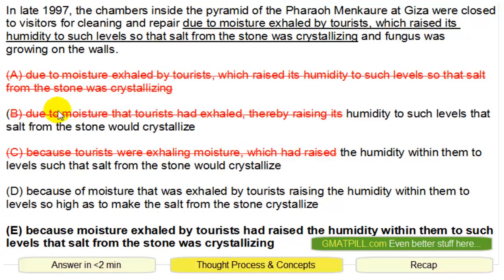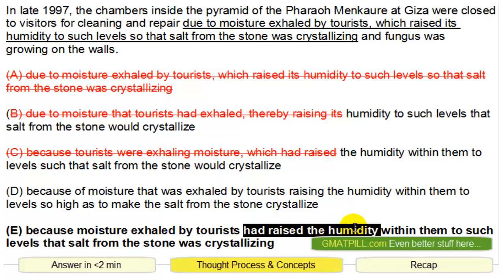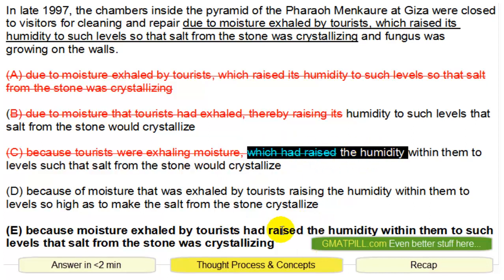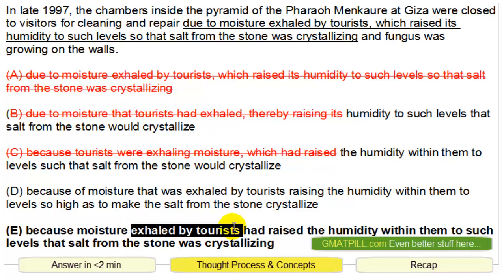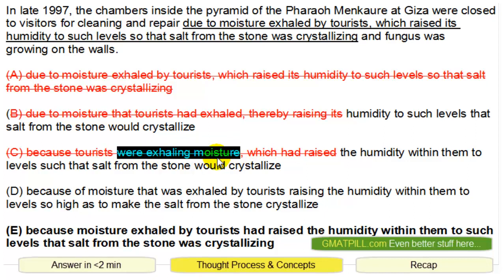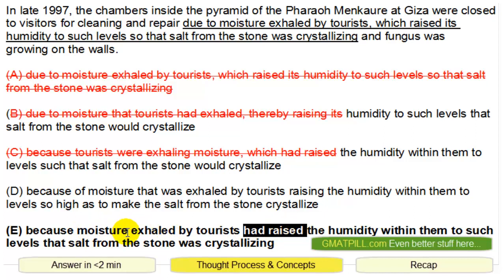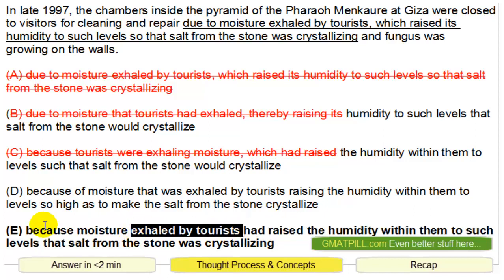Now what's going on here? We eliminated A, B, and C. Some of you might be wondering: in E, 'exhaled by Taurus' versus 'was exhaled' — they both have 'had raised.' The difference is 'exhaled by Taurus' is just a descriptive phrase describing moisture, whereas in C, 'the Taurus were exhaling moisture' is an action. So in E, we're still talking about moisture, and the moisture had raised. 'Exhaled by Taurus' is simply the fluff — a descriptive phrase. So really, it's the moisture had raised the humidity within the chambers.